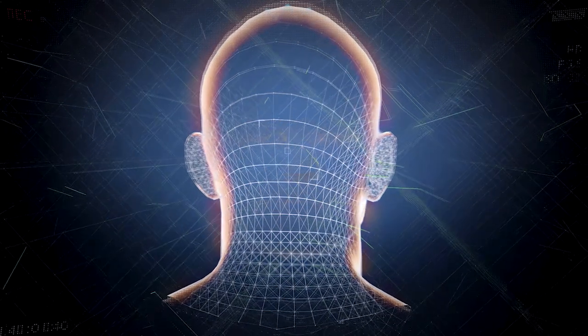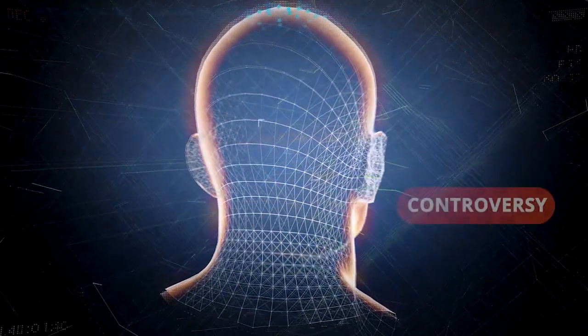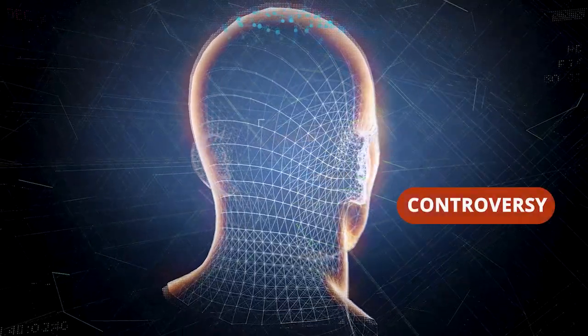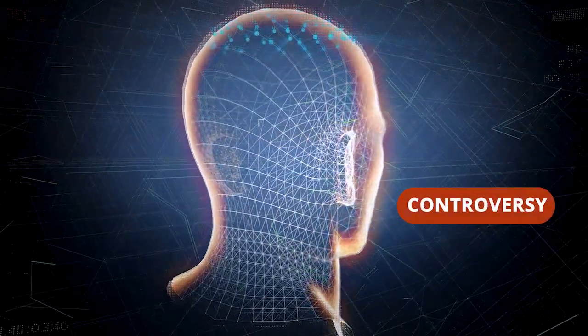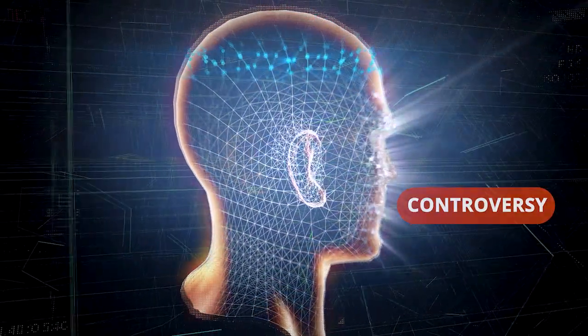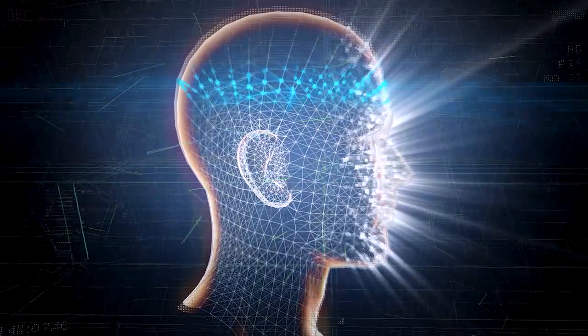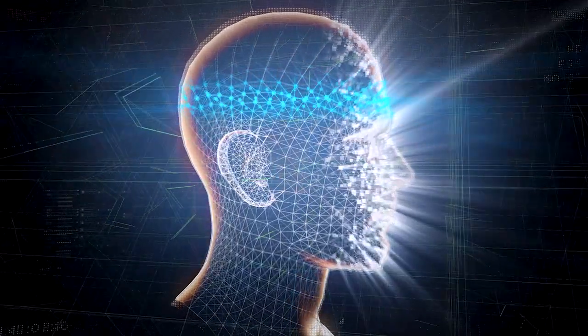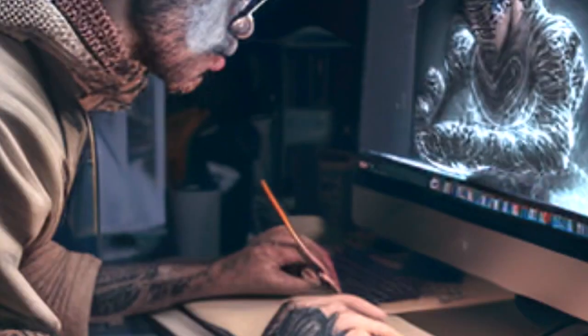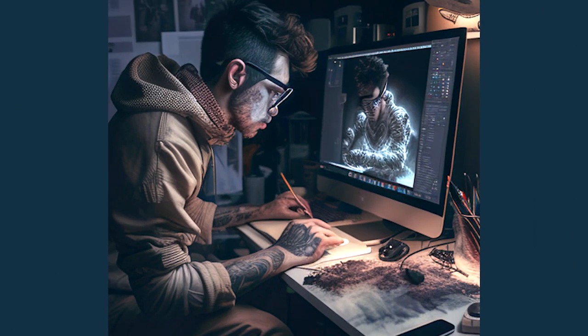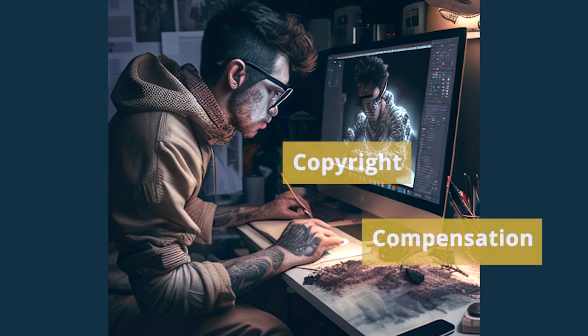The technology is in its infancy and very controversial. The underlying AI scours millions of graphic contents on the internet to develop its learning model. This uncompensated artwork library is created by real working artists. Where does copyright fit in? What about compensation?